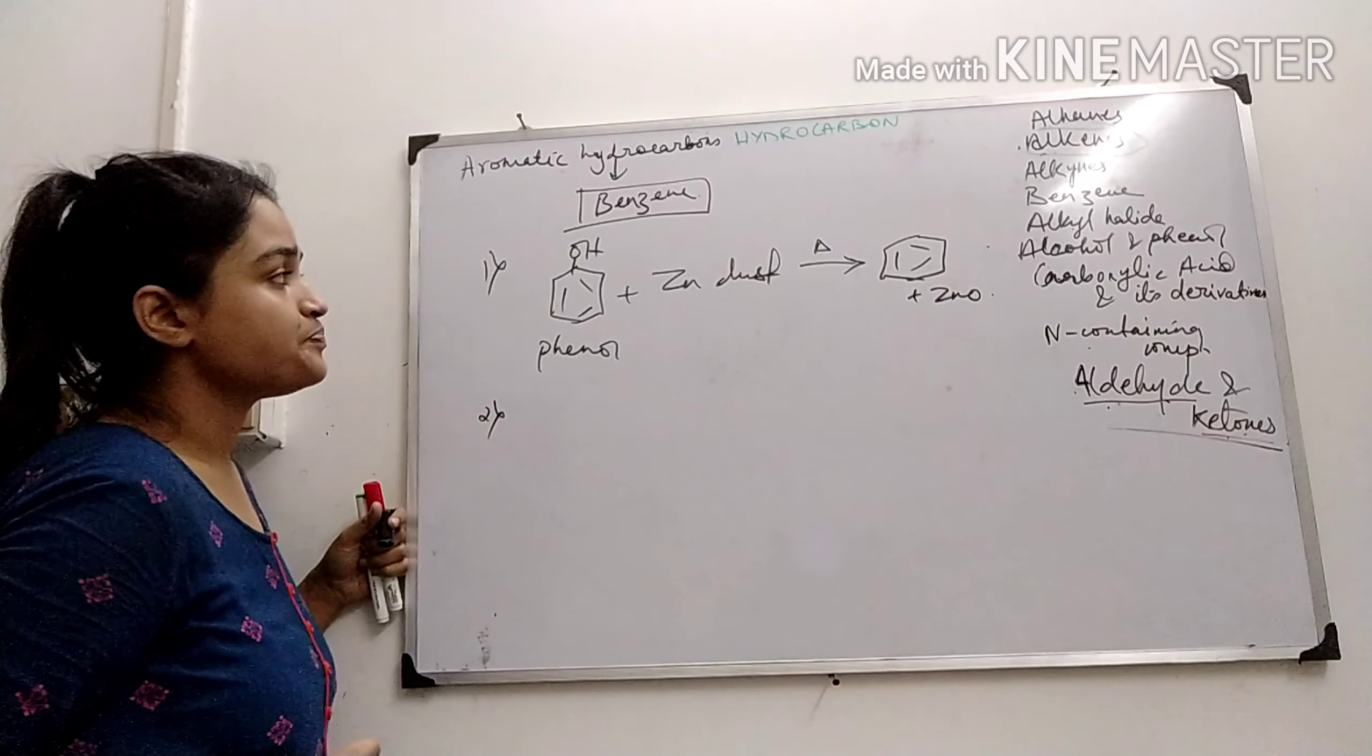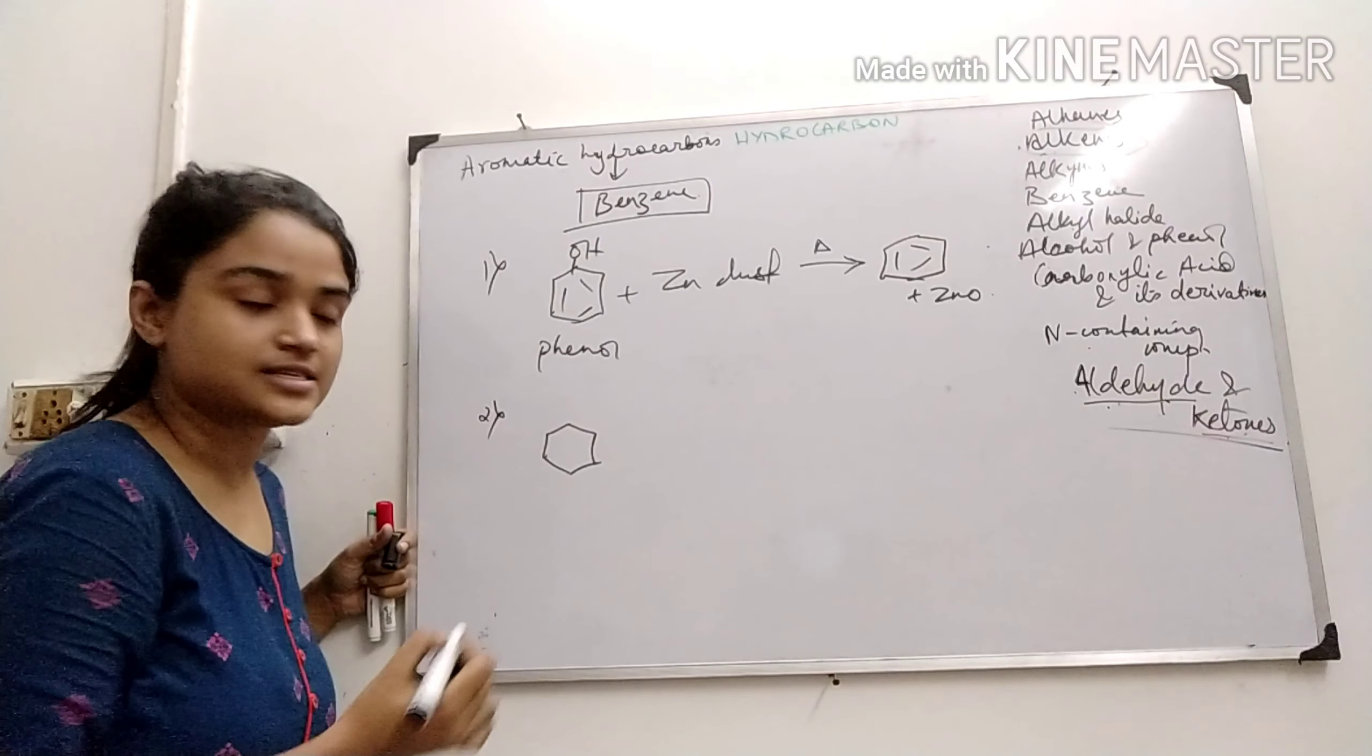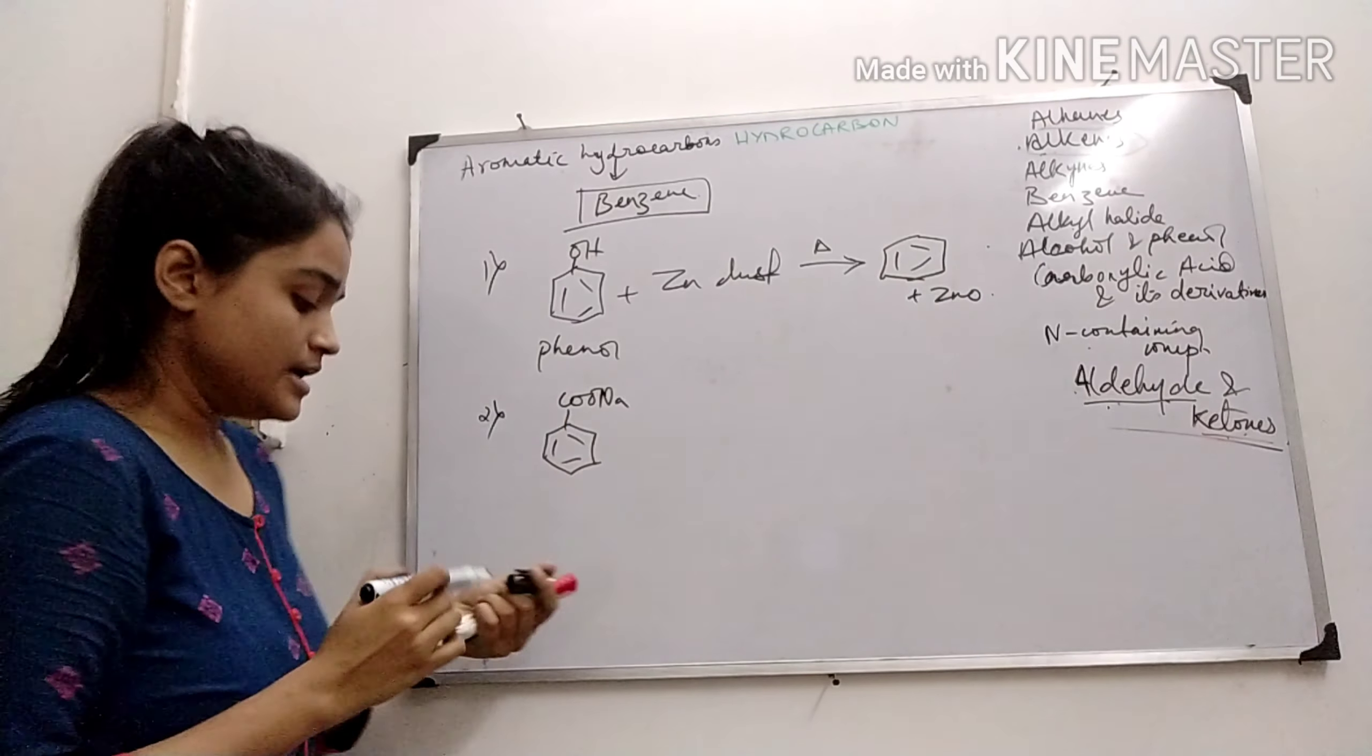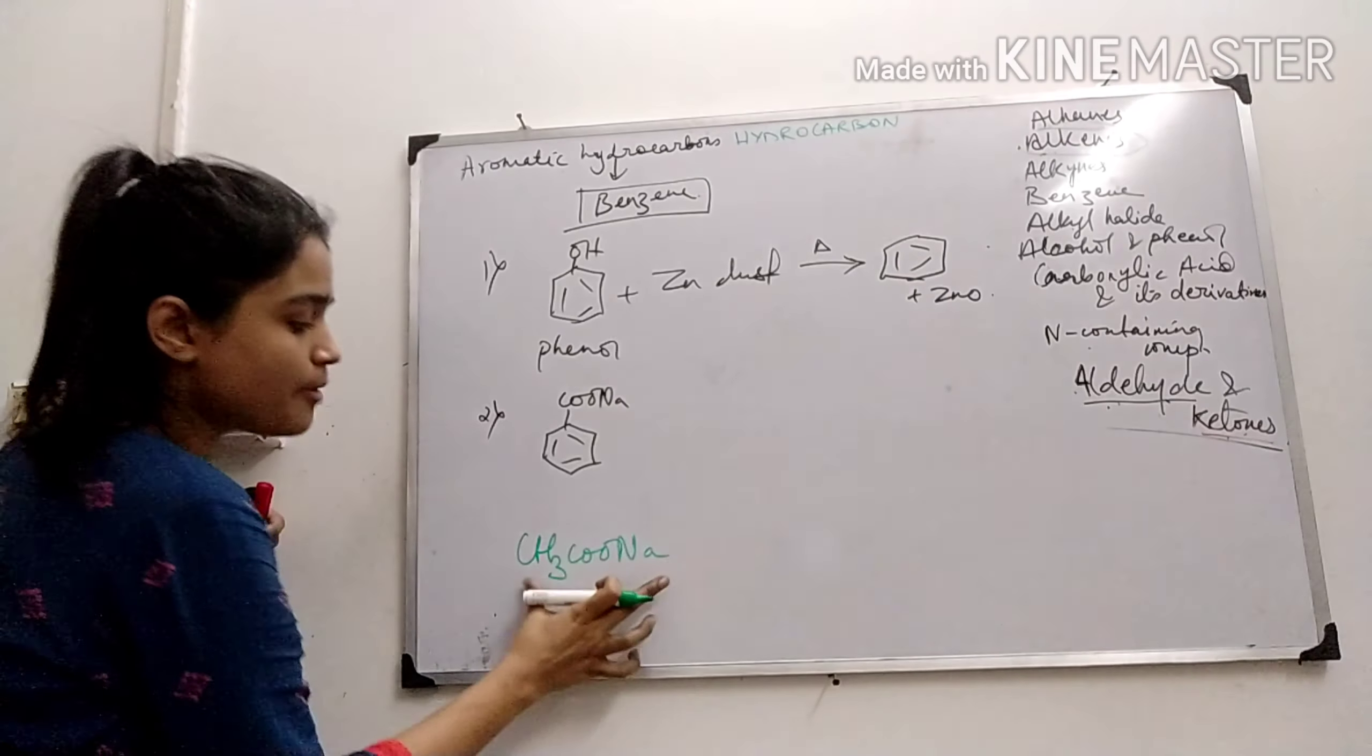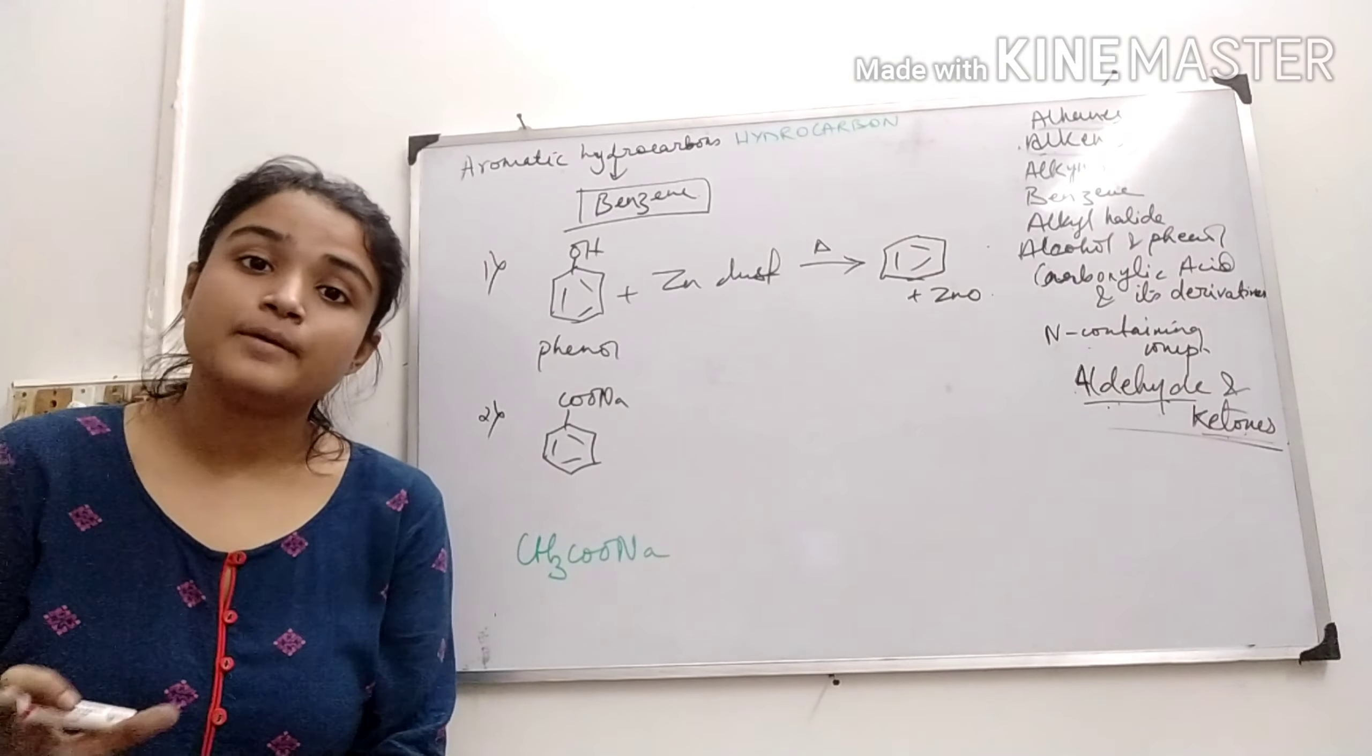Next is from the derivative of acid. In case of alkanes, in the formation of alkanes from acids we saw how from the derivative of acid we were getting alkanes with one carbon less. That was decarboxylation reaction taking place.